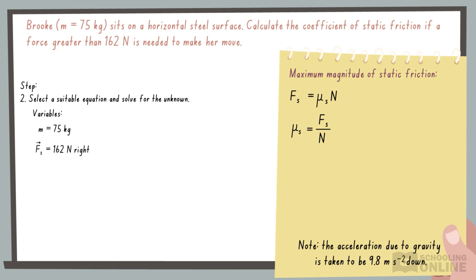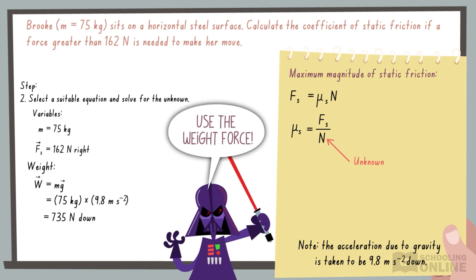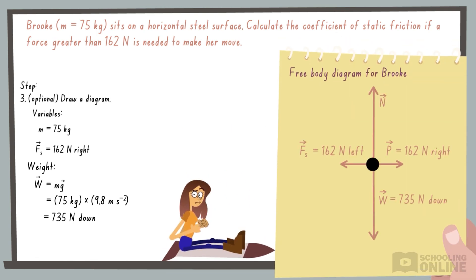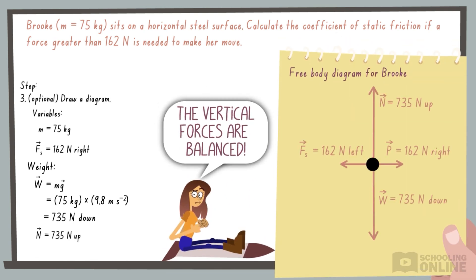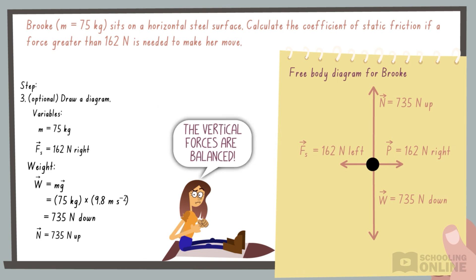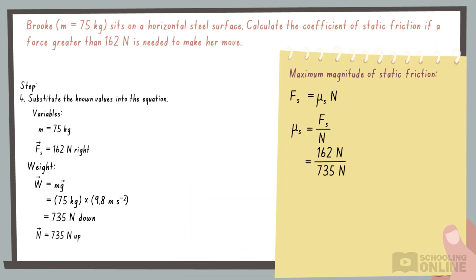We already know the maximum amount of static friction, but we aren't given the normal force. However, we can calculate the weight force by multiplying mass and gravity. Since Brooke is stationary, the vertical forces are balanced, and the normal force is 735 Newtons up. Hence the coefficient of static friction is 0.22.